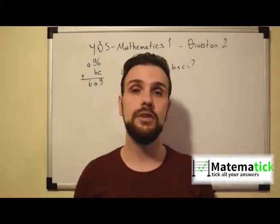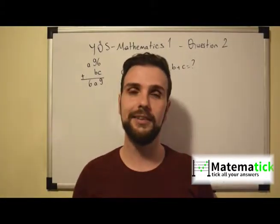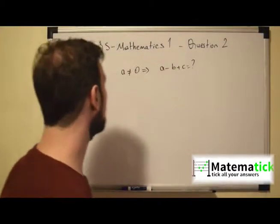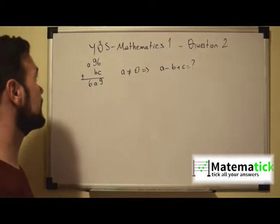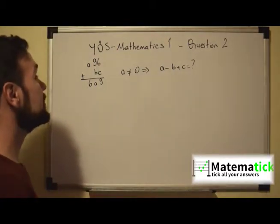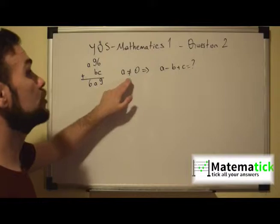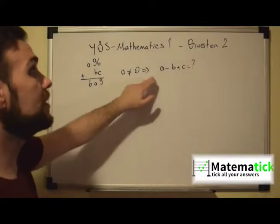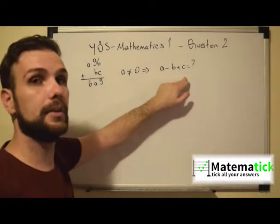So let's see what the question asks us and what is the process we need to follow to get to the right answer. In this question we have A96 plus BC equals 6A9. If A should not be equal to 0, what is the value of A minus B plus C?